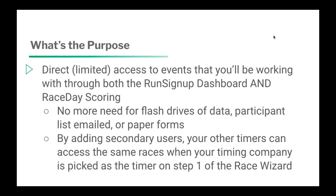If for some reason you do need more access and they need help setting up the race itself and going through the Race Wizard, you could go one of two paths. Either A, they set up the skeleton of the race and then add you as a race director, or number two, you can set up the race and then add them as a race director. So just two ways of getting to that same point where you have full access. You can also add secondary users, so other timers underneath your company name have the same access to races. That's when a race owner goes into step one of the Race Wizard at the very bottom and selects your timing company name from the dropdown. If they select your company, you as the timing owner have access, as do all of your other secondary timers, which is super helpful — so you don't have to give out your username and password to your other timers.